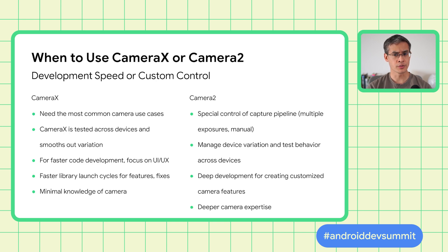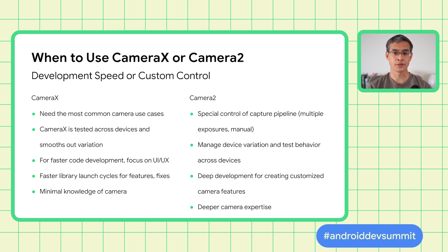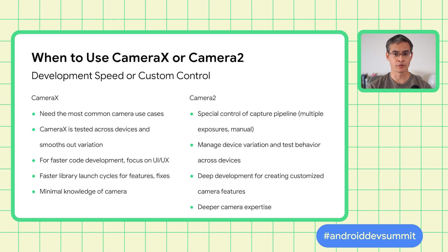So when should you use CameraX or Camera2? It depends if your focus is on development speed or custom camera control. Consider using CameraX if you need common use cases like taking a photo or video. Consider using Camera2 for special control of the capture pipeline, such as driving multiple exposures or driving full manual capture. CameraX is tested across devices and designed to smooth out device variation, while Camera2 requires the app to manage device variation and test behavior across devices.